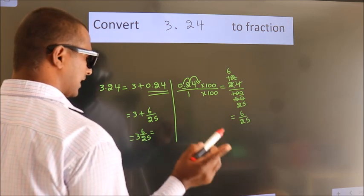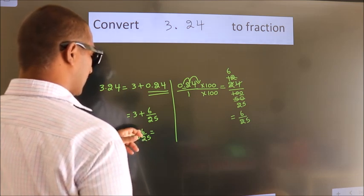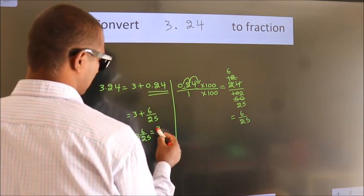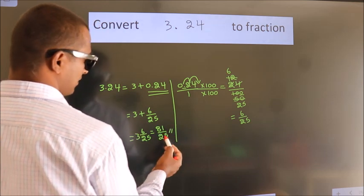And in improper fraction it is 3 into 25, that's 75 plus 6. 81 by 25 is our fraction.